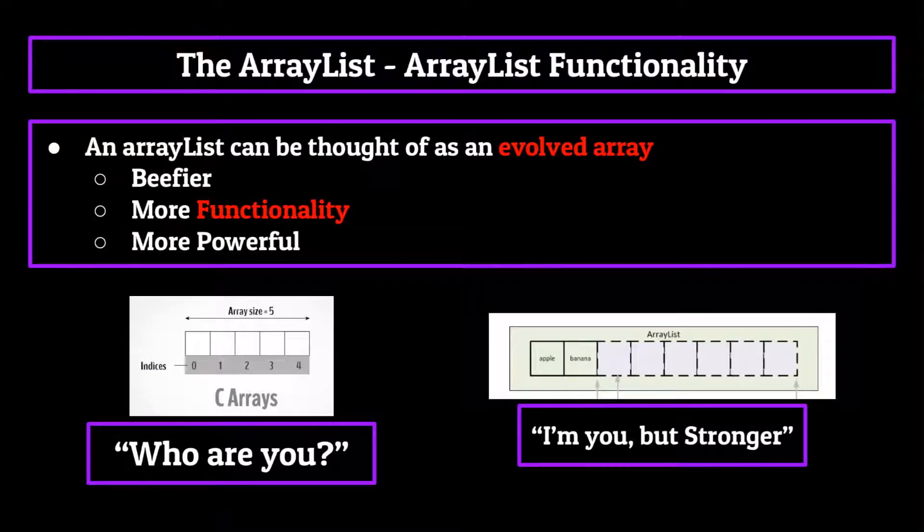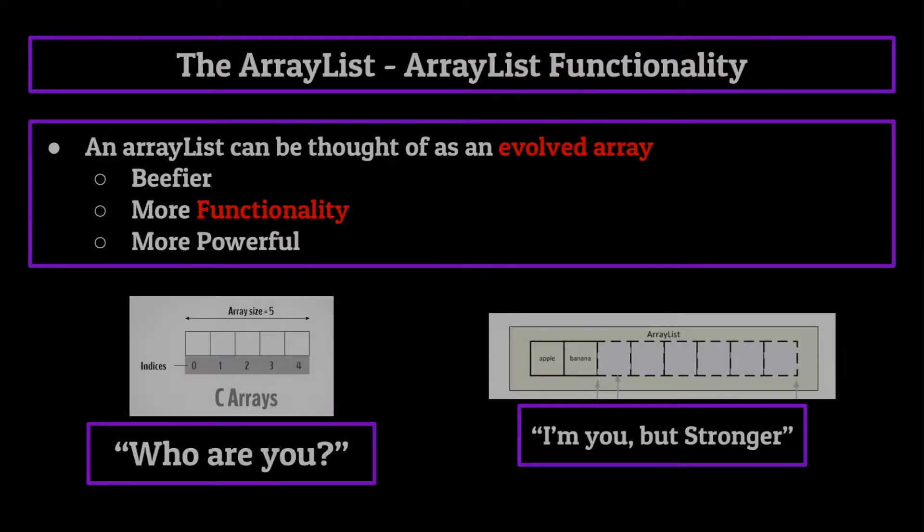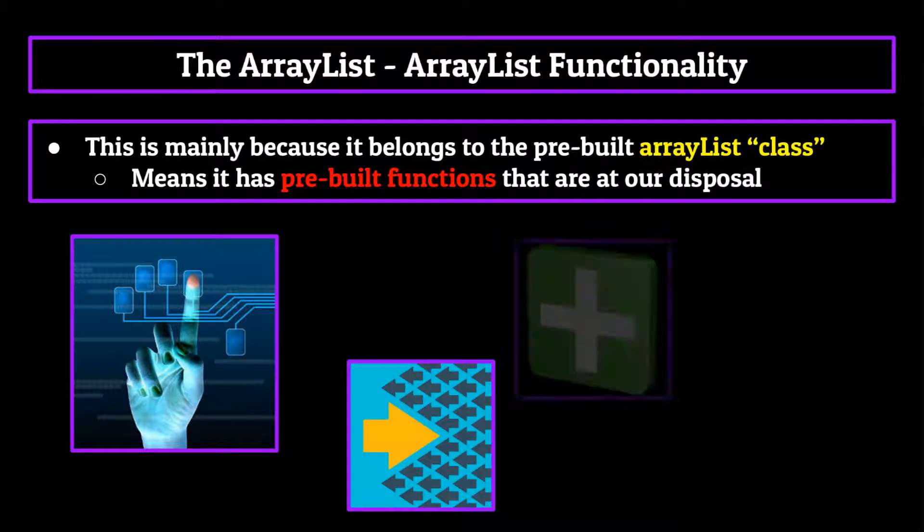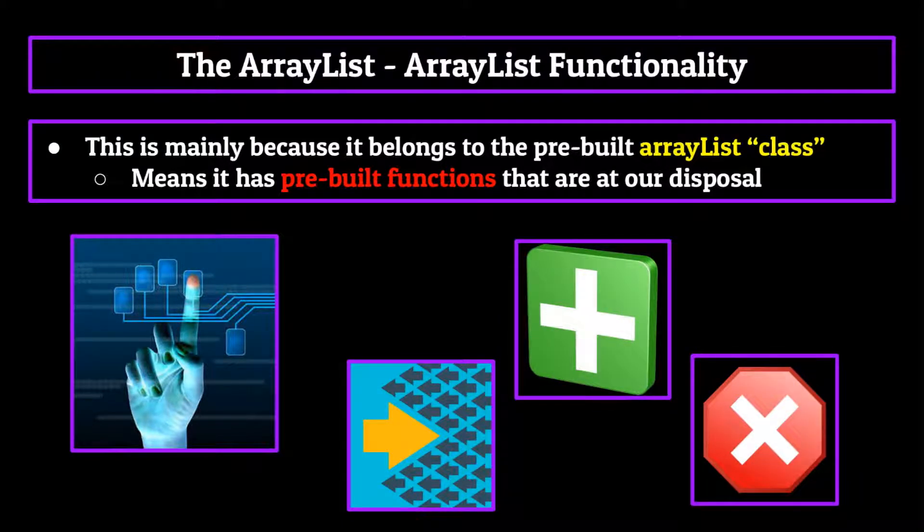Moving on, let's talk functionality. Now, an ArrayList can be thought of as pretty much the evolved form of an array. It's a bit beefier, has a little bit more functionality, and is overall more powerful than an array. That's not to say it's going to be better in every case, but for the most part, it's going to be thought of as the favorite sibling amongst the two. This is mainly attributed to the fact that it belongs to the prebuilt ArrayList class, which we talked about earlier. The fact that the ArrayList belongs to a class means it's going to come with some prebuilt functions that are already at our disposal from the moment we define the ArrayList. More specifically, the ArrayList comes with methods we can use to access, change, add to or delete from it easily. If you're using an array, you would have to program most if not all of these methods by hand.